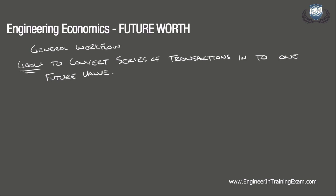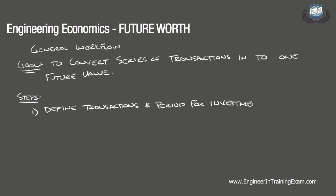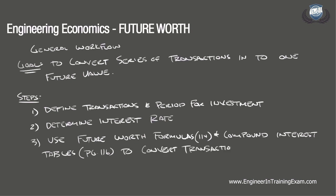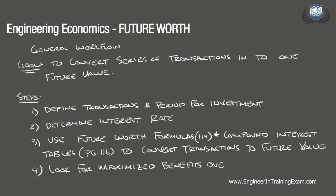The general workflow is the same regardless of whether it is a single or a multiple alternative problem. The steps are as follows. Number one, define the various benefits and costs identified for the alternative in the period of the entire investment. Number two, determine the interest rate. Number three, using the future worth formulas in the table on page 114 and the compound interest table starting on page 116 of the NCEES Supplied Reference Handbook, convert the benefits and costs into a future value. And number four, we are typically looking for our benefits to be maximized over the period of the investment.